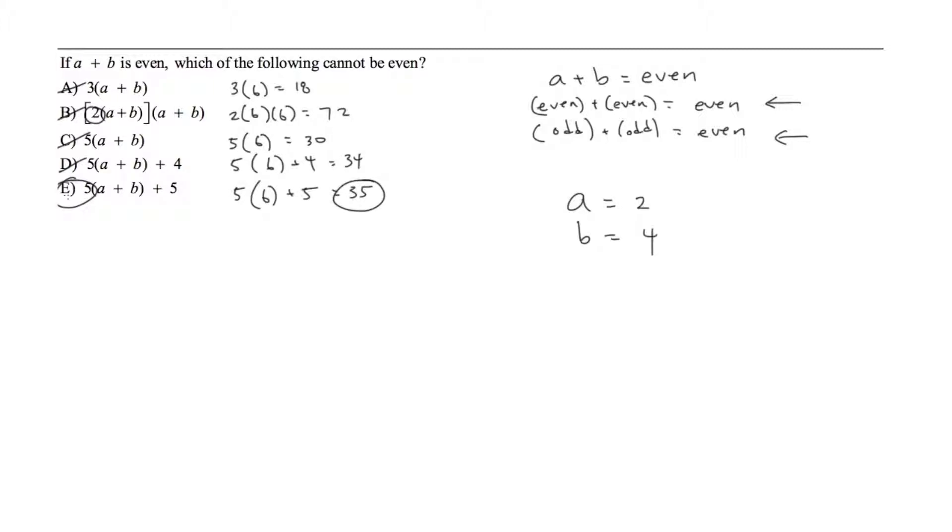Now if multiple answer choices seem to work, let's say B turned out to be 71 instead of 72. I know that's not the case but let's just pretend that was the answer you got. We would be stuck between B and E. The next step would be for you to plug in different A and B values. In this case it might be a good idea to plug in 1 and 3 like we mentioned, the other types of numbers. And then just plug that into B and E as well and see if you can eliminate any from that.